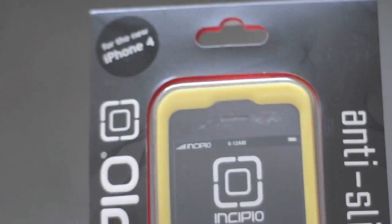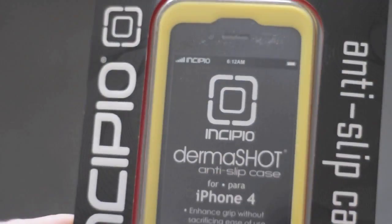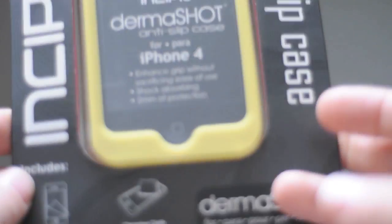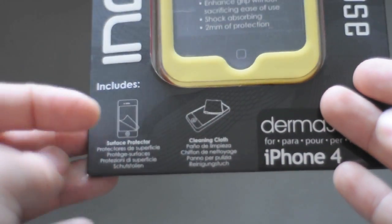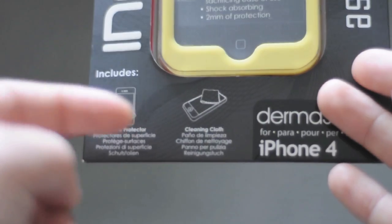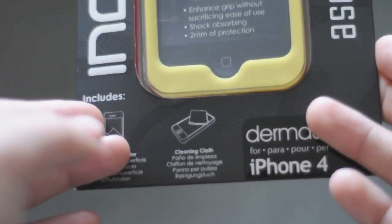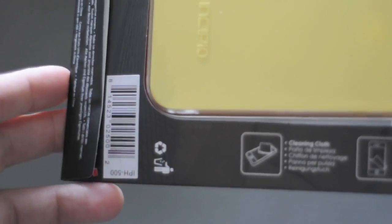It is a silicone case in yellow. A couple things it comes with are some surface protectors and cleaning cloth. Incipio is actually a pretty decent company. Their cases aren't overly expensive and they include a lot of stuff.